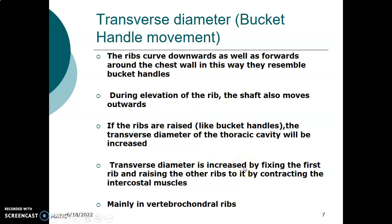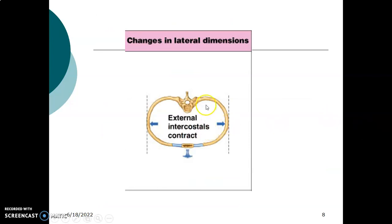The transverse diameter is increased by fixing the first rib and raising the other ribs by the intercostal muscles. Usually the ribs are resting downwards and forwards. During inspiration, the intercostal muscles contract, fixing the first rib and causing the other ribs to move outwards and upwards. The bucket handles now move upwards and outwards, increasing the transverse diameter. This increases the volume and reduces the pressure within the thoracic cavity, making the atmospheric pressure force air inside. This transverse diameter increase is mainly caused by the vertebrochondral ribs.